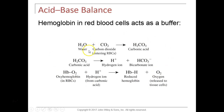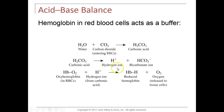When acid binds to hemoglobin, it kicks oxygen off so cells can use it, and hydrogen is being buffered so it is not reducing the pH. The carbonic acid-bicarbonate buffering system is one of the most important buffering systems in the body. If our blood pH falls too low and we become acidic, hydrogen binds to bicarbonate (HCO3−), reforming carbonic acid.